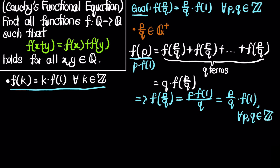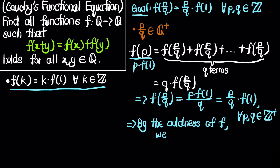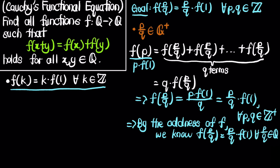This holds for all positive integers p and q, and by the oddness of f it extends to f(p/q) = (p/q)·f(1) for all rational numbers p/q. Therefore f(x) = cx where c = f(1) is a rational number, proving the case for f: ℚ → ℚ.